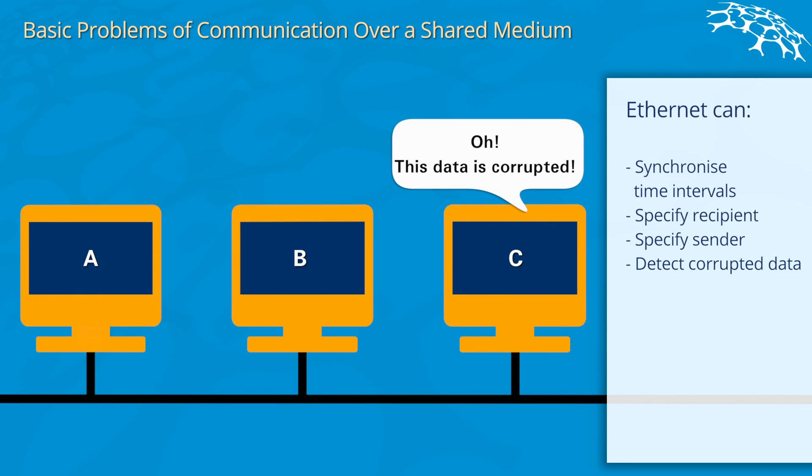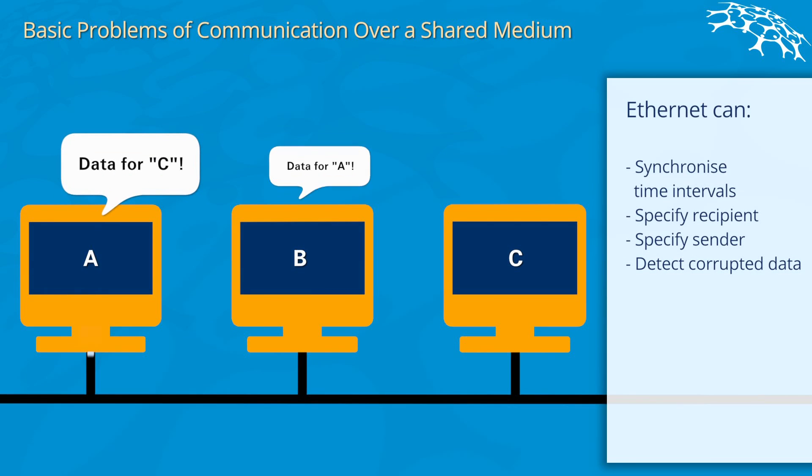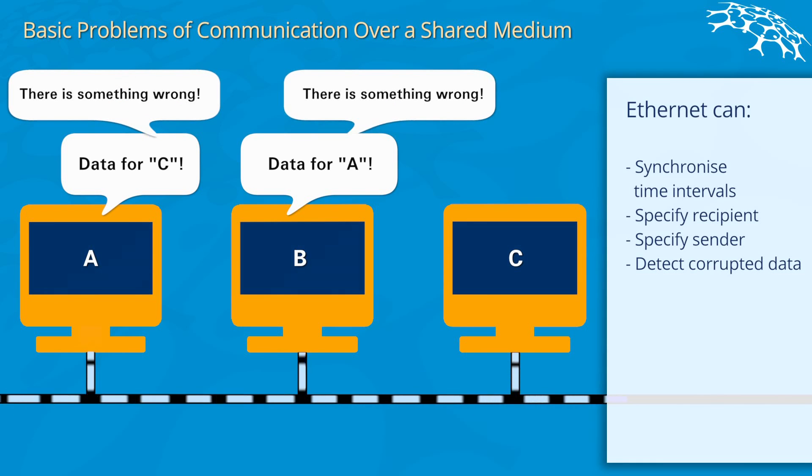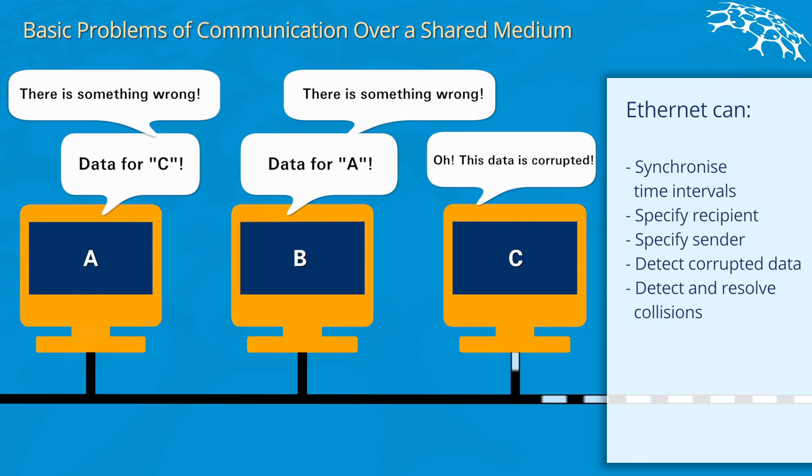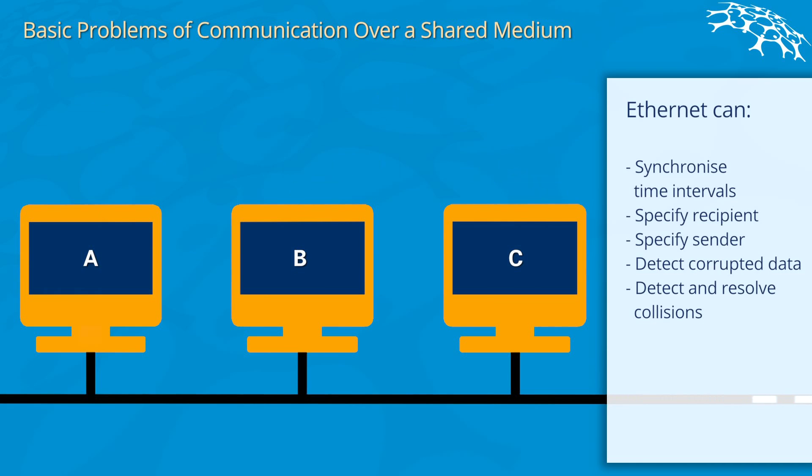Last but not least, Ethernet can also detect collisions. So if A and C start to transfer data at the same point in time, they know something went wrong. And C of course gets corrupted data because the data is overlapped by two packages. We will see in a later video how exactly this works.